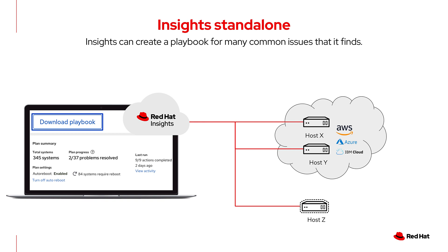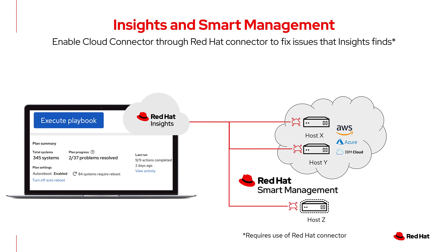You have to figure out how to run that playbook. Once you add Smart Management into the mix, it enables Cloud Connector and the Execute Playbook button. Using Red Hat Connector, you can connect Insights and the host together through Cloud Connector to enable the Execute Playbook button, which allows you to generate the playbook and send it to the host to be fixed.